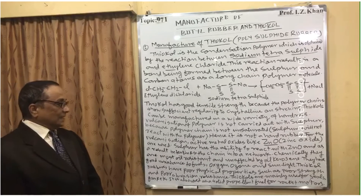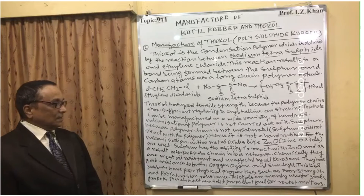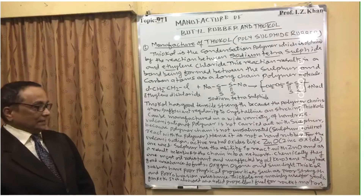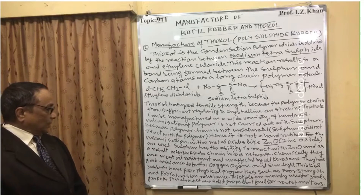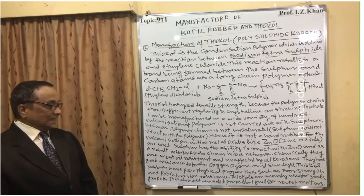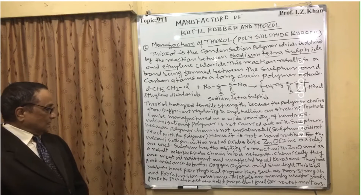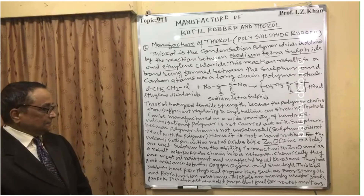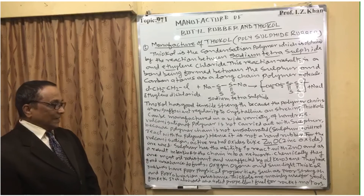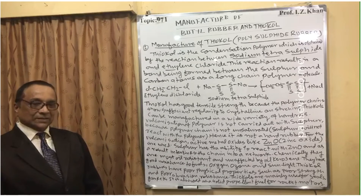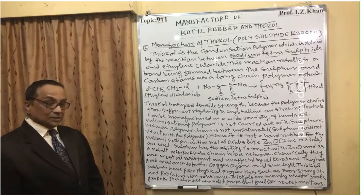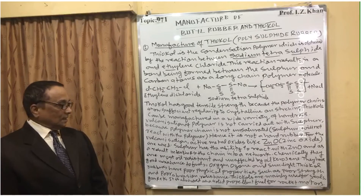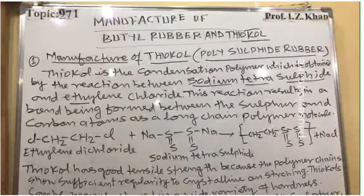Zinc oxide interlinks the chains into a network. Chemically, Thiokol rubbers are most oil resistant and unaffected by sunlight. However, Thiokol rubbers have poor physical properties such as poor strength and poor abrasion resistance. Thiokols are mainly used for seals, gaskets, and also as a solid propellant fuel for rocket motors.